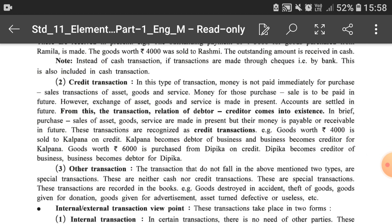In credit transactions, money is not paid immediately for purchase or sale of assets, goods, and services. A credit period of four months, six months, or a year is given to make payment at a future time, in order to increase sales. Most businessmen have to do credit transactions. Exchange of assets, goods, and services is made in the present, but money for those purchases or sales is to be made in future.